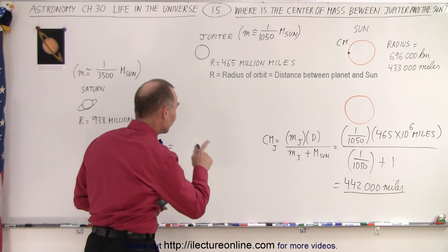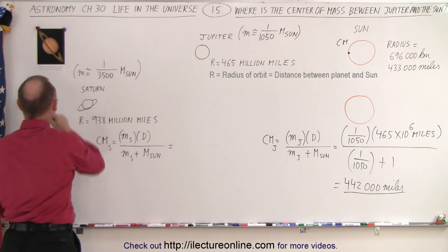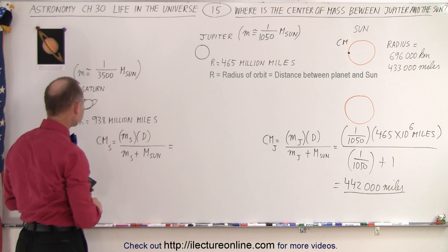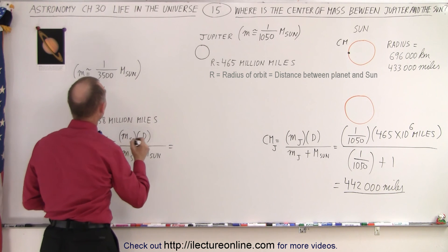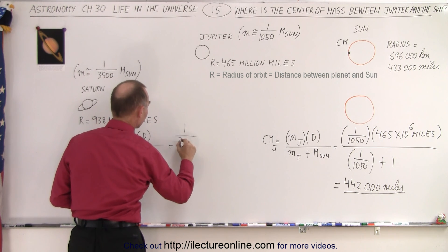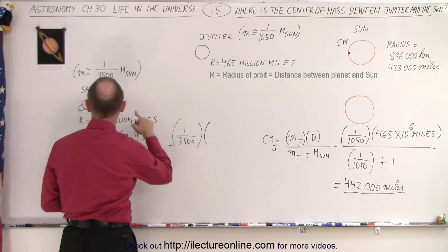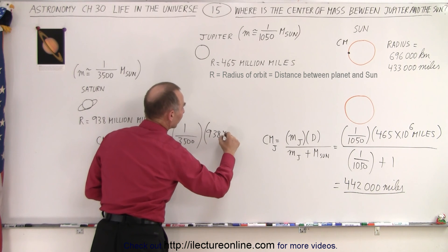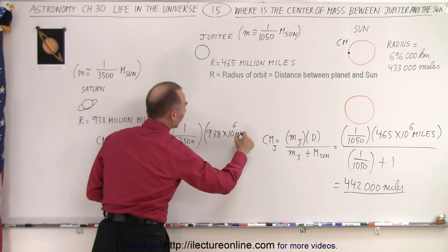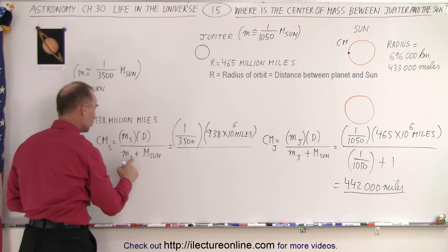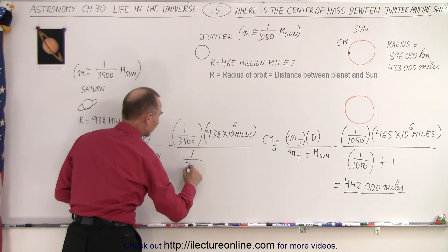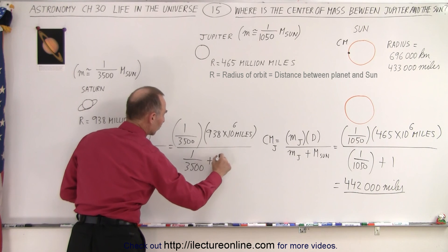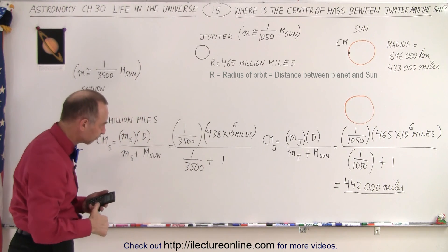Now let's do the same for Saturn, and here we have a beautiful picture of Saturn. So the mass of Saturn is less, it's 1/3500, and we multiply it times the distance, that would be 938 million miles, so 938×10^6 miles, and we divide that by the sum of the two masses, that would be 1/3500 plus 1 times the mass of the Sun.